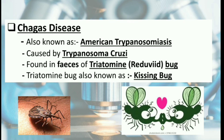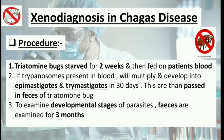In the next slide, we will understand the procedure of Xenodiagnosis in Chagas disease. We take triatomine bugs and starve them for 2 weeks. After starving them, we feed them on the patient's blood. If the patient's blood contains trypanosomes, they get multiplied and develop into epimastigotes and trypomastigotes in 30 days. After this development, they are passed in the faeces of the triatomine bug. If we want to examine the developmental stages of the parasite, we have to examine the faeces for 3 months.